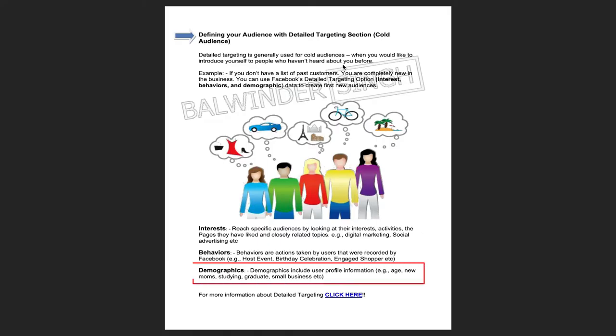What is their interest, what do they like, and what's their behavior on Facebook? Whether they are an engaged shopper, or whether they just celebrated a birthday — engaged shoppers are people who recently bought something on Facebook. The last part is demographic: where they live, what's their gender, what's their relationship status, what's their age. That's the demographic.